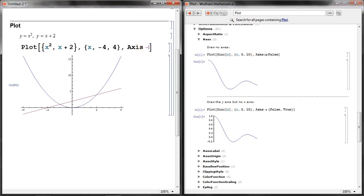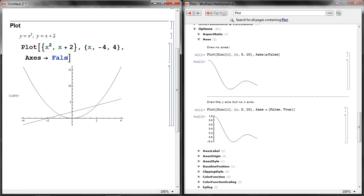It should be axes, not axis. Hyphen and greater than sign. When you hit equals, it changes to an arrow. And if I say false, then it gets rid of the X and Y axes. It doesn't plot them.